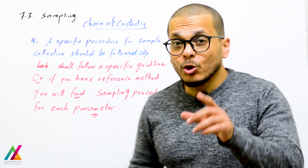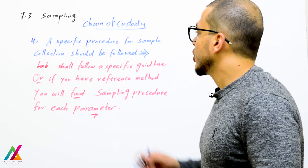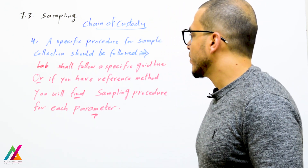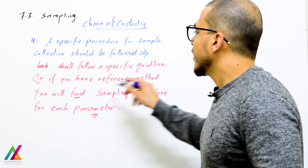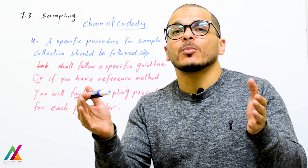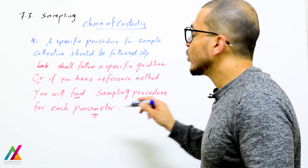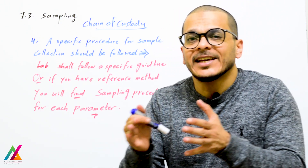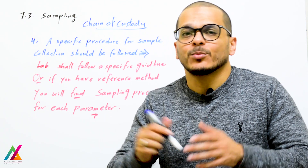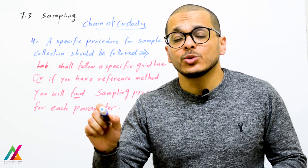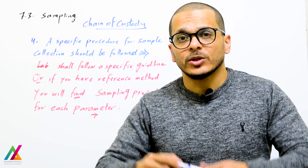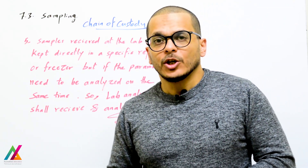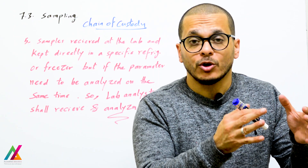For sample collection, a specific procedure shall be followed. The lab shall follow a specific guideline, and in the reference method you will find a sampling section describing how to collect each parameter. The sampling plan and sampling procedure shall be available at the site with the sampler.